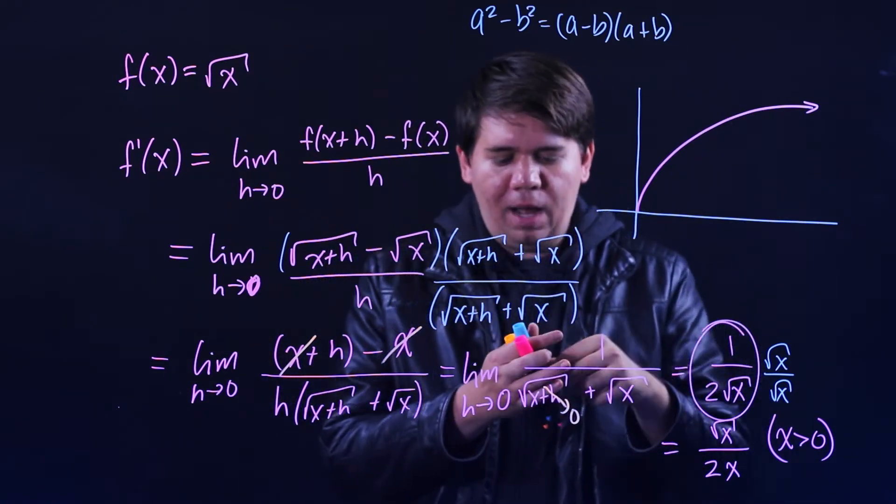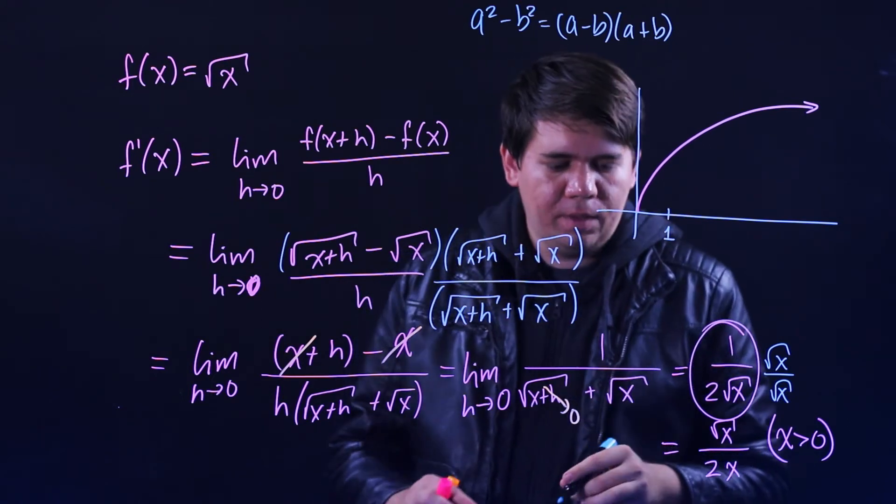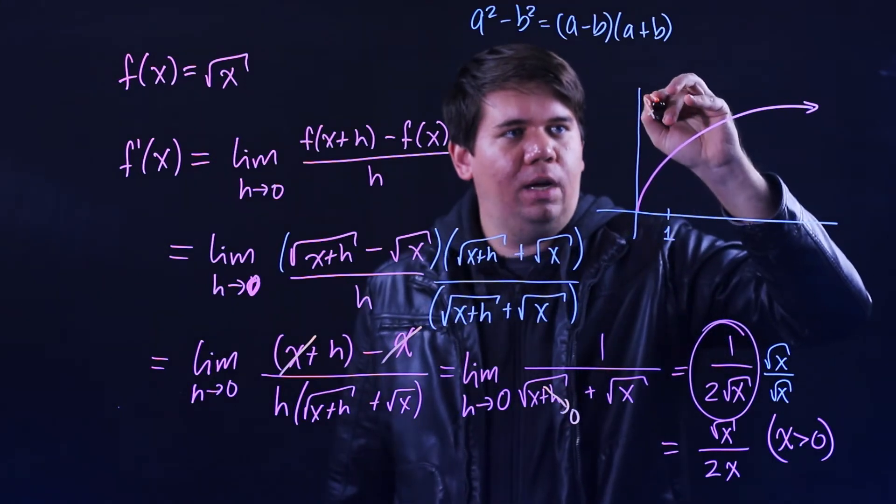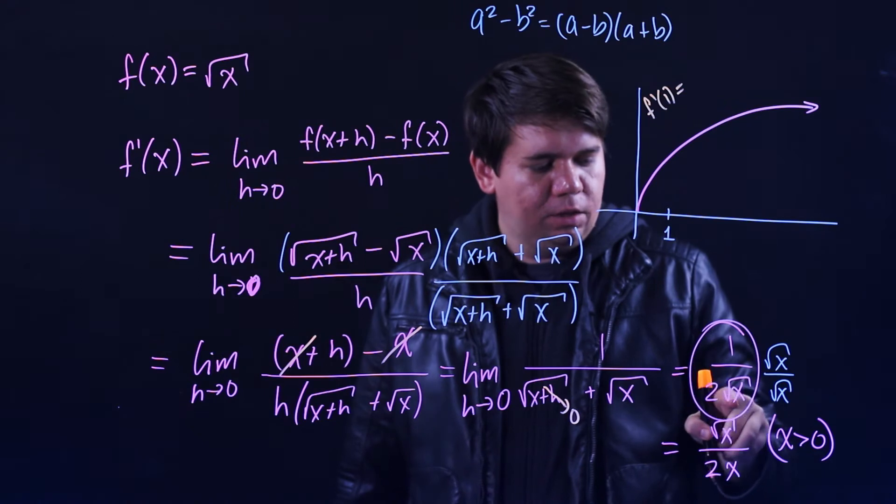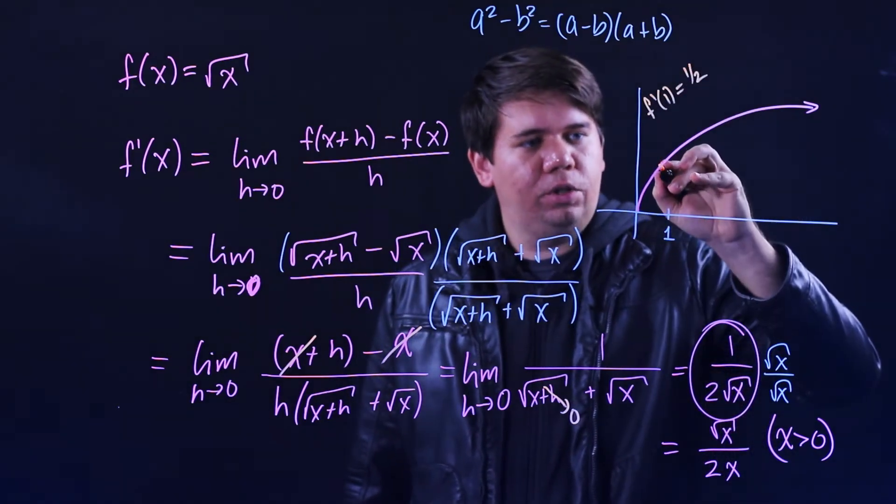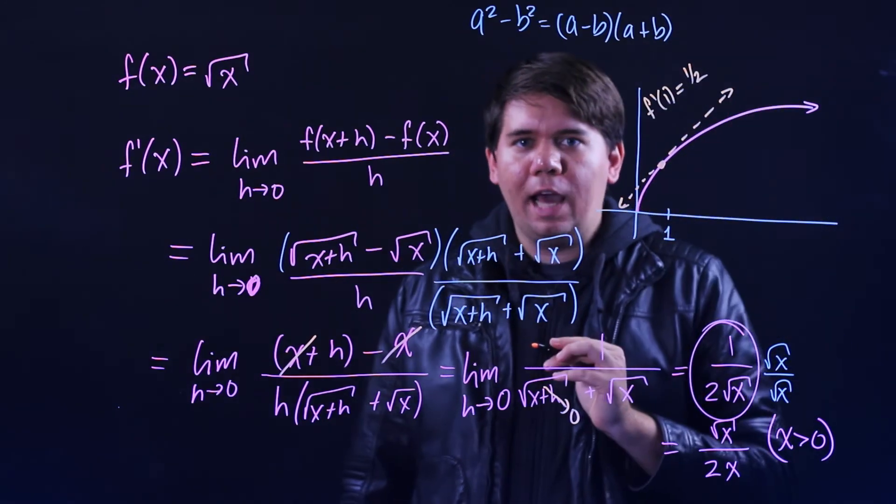If you pick any positive place, for instance let's pick 1 and plug 1 into this formula. f prime at 1 is just 1 over 2 times the square root of 1, that's just 1 half, which agrees with the fact that the tangent line here has slope 1 half.